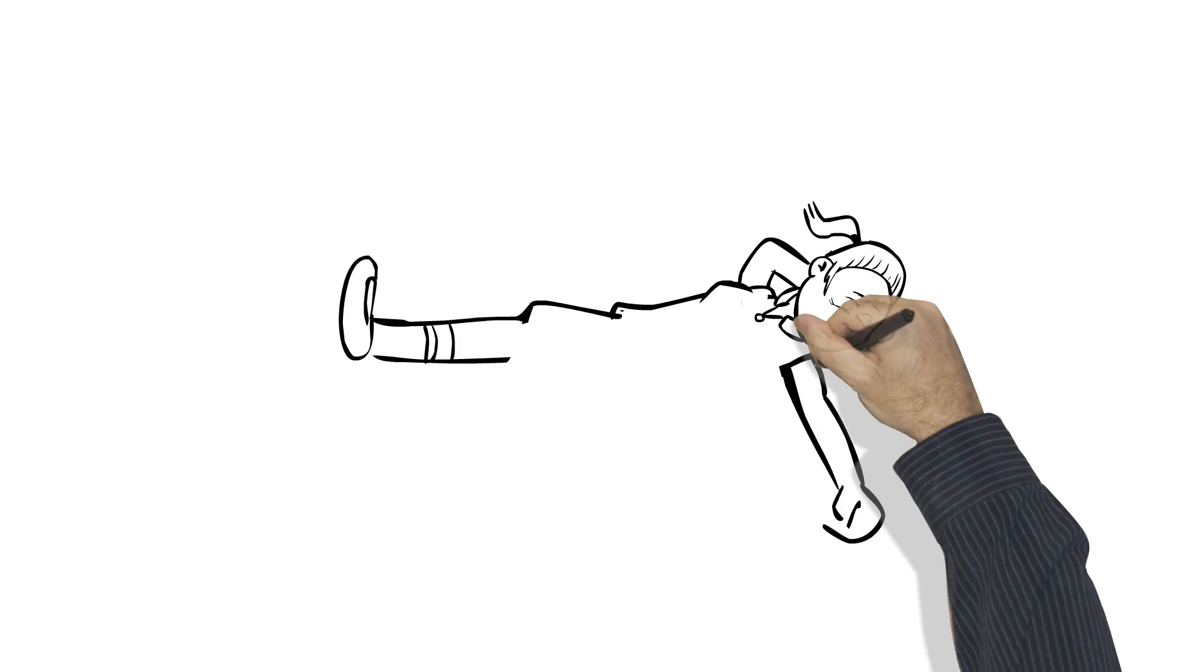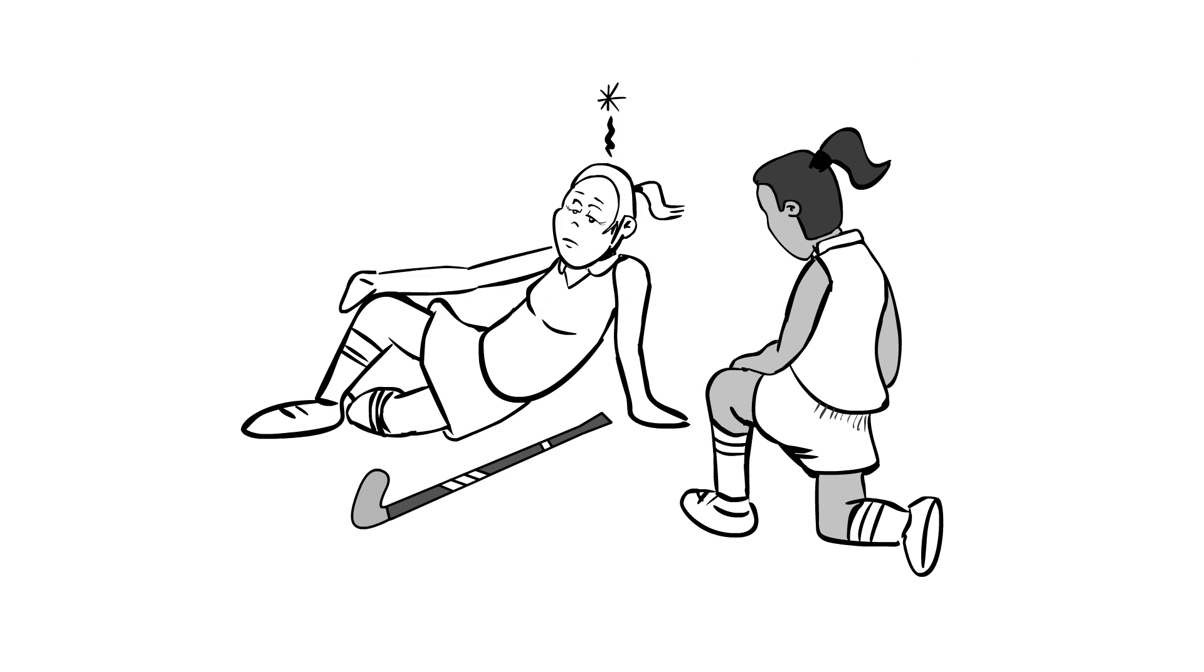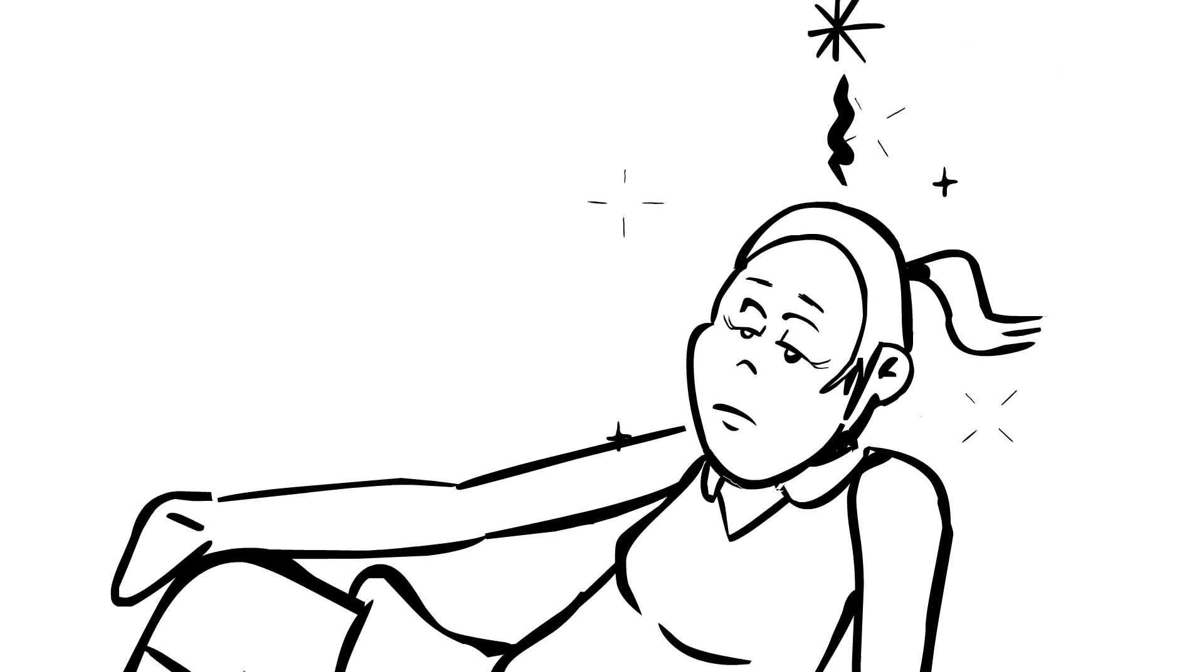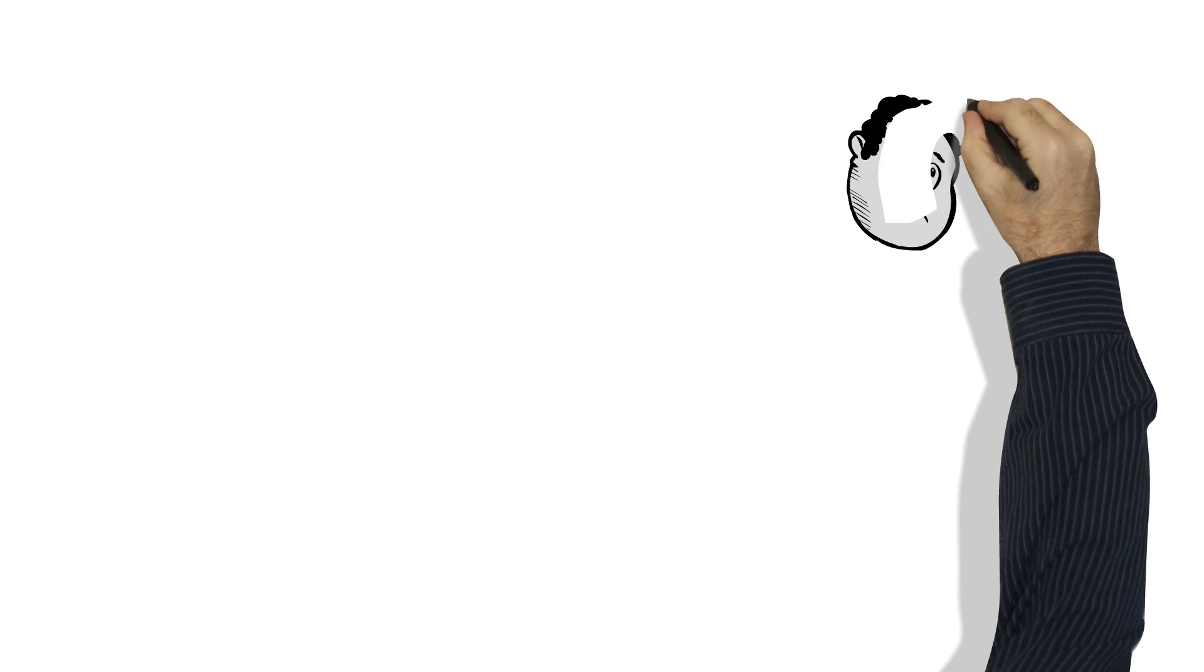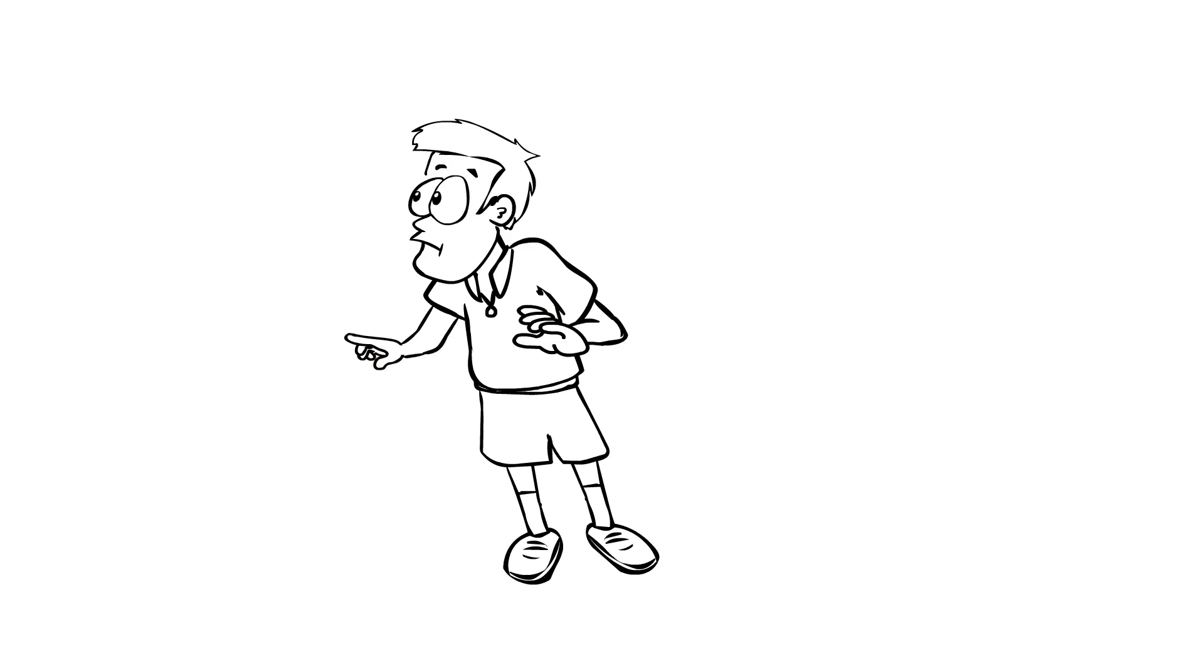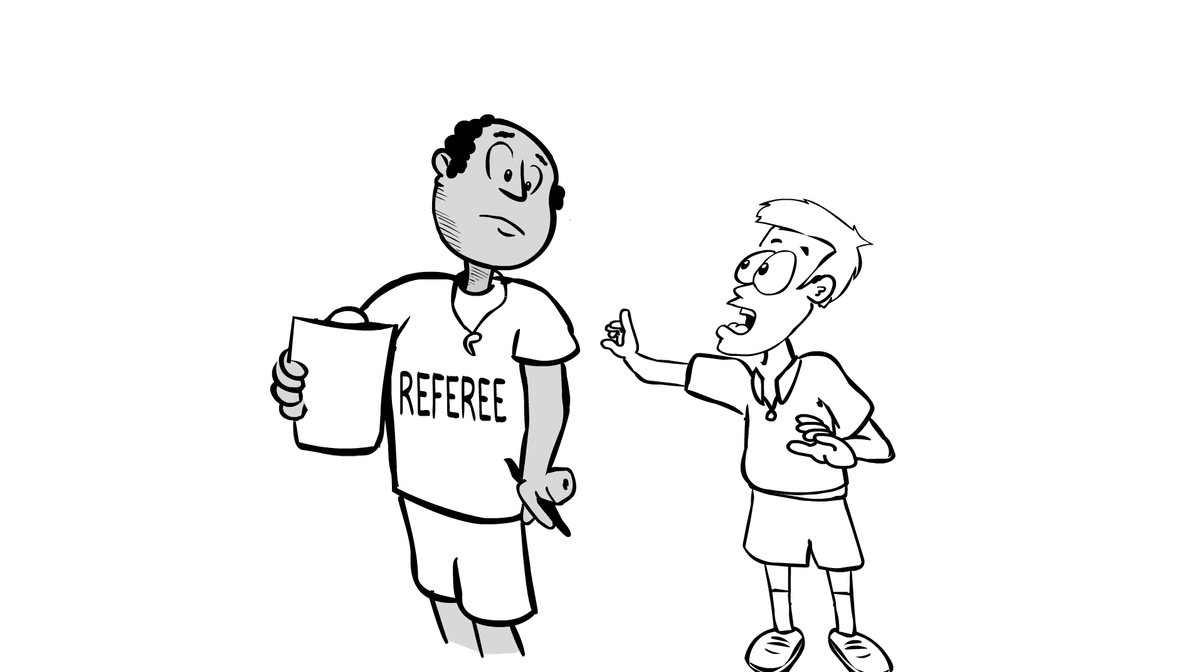You might even have been knocked out, but it's important to realize that you don't have to lose consciousness to have a concussion. Now, it's really important to recognize when concussions may have happened, and remove those affected from activity straight away, so that they can be checked out. You can help here by keeping an eye out for teammates and letting the coach or referee know if you are worried about yourself or others.